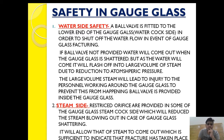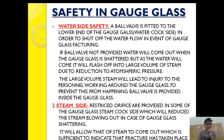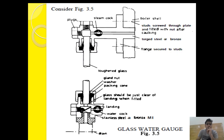Let's begin. Safety in gauge glass can be categorized into two parts. The first part is water side safety and the second part is steam side safety. The top part of the gauge glass is where steam enters, and the lower part is where water enters, to maintain equilibrium and indicate the water level present inside the boiler.